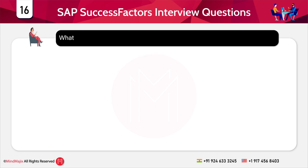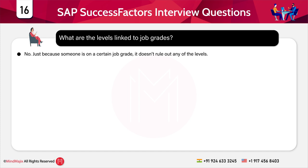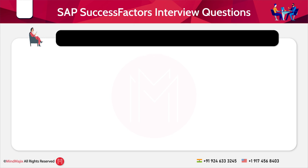The next question is: what are the levels linked to job grades? Just because someone is on a certain job grade it doesn't rule out any of the levels. However, if a job is more senior, you would expect to see more of the university-level behaviors.